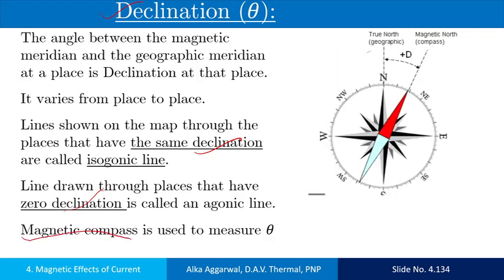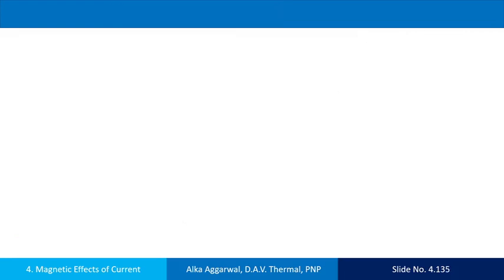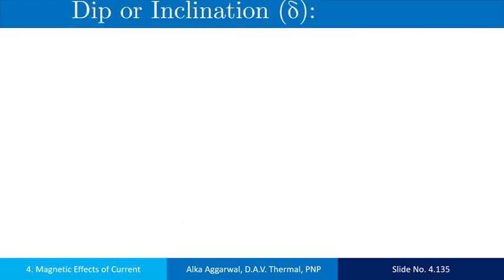If this is geographic north and this is magnetic north, then this angle between them is the angle of declination.